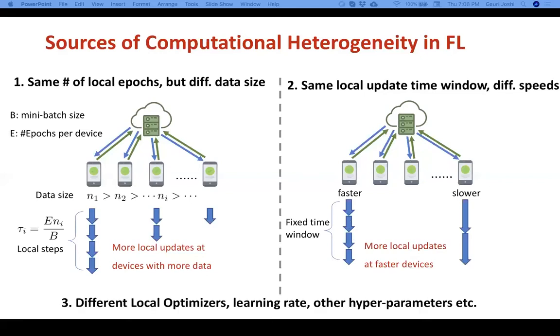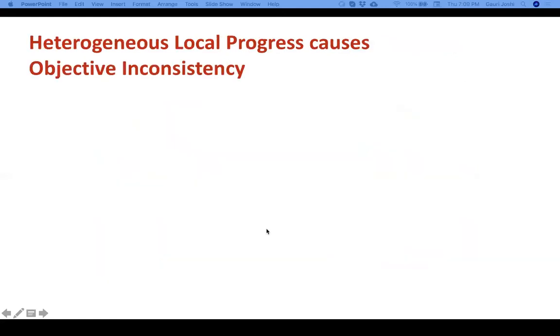And finally, even if the number of local updates is fixed across clients, they may use different local optimizers or different learning rate schedules, etc., that might result in heterogeneous local progress being performed at these clients. So all of these sources of computational heterogeneity cause a problem called objective inconsistency.